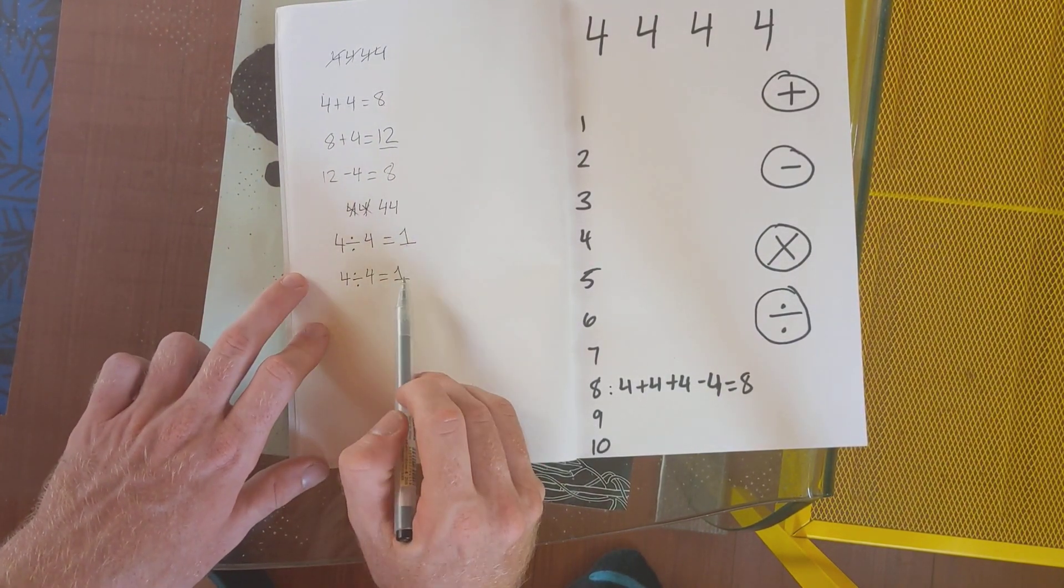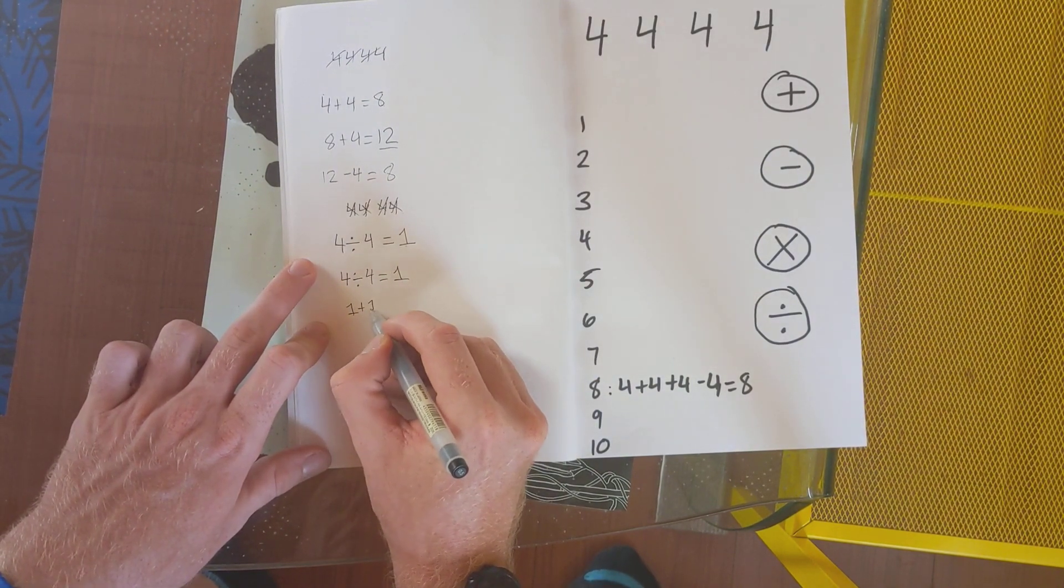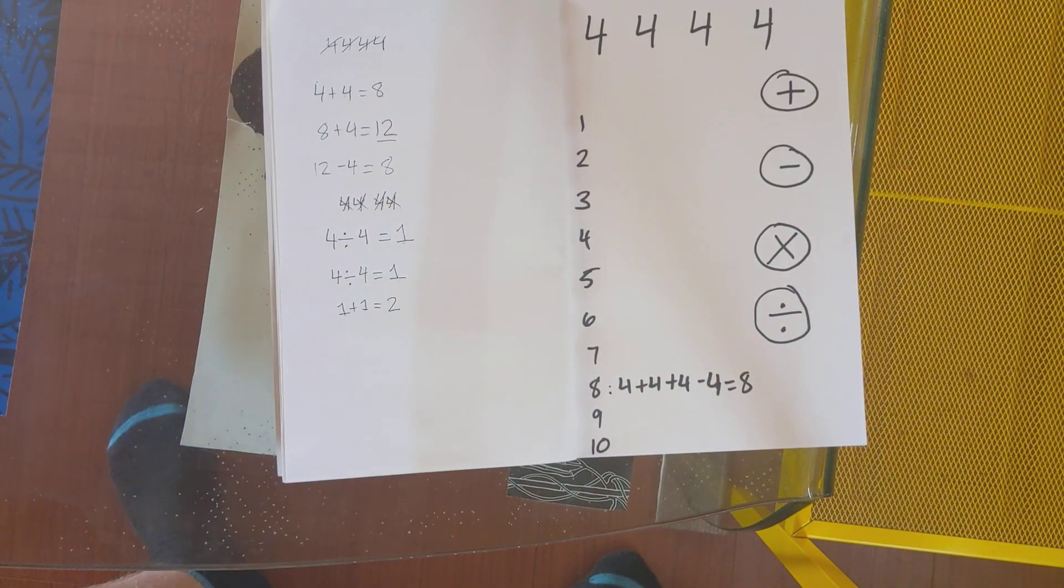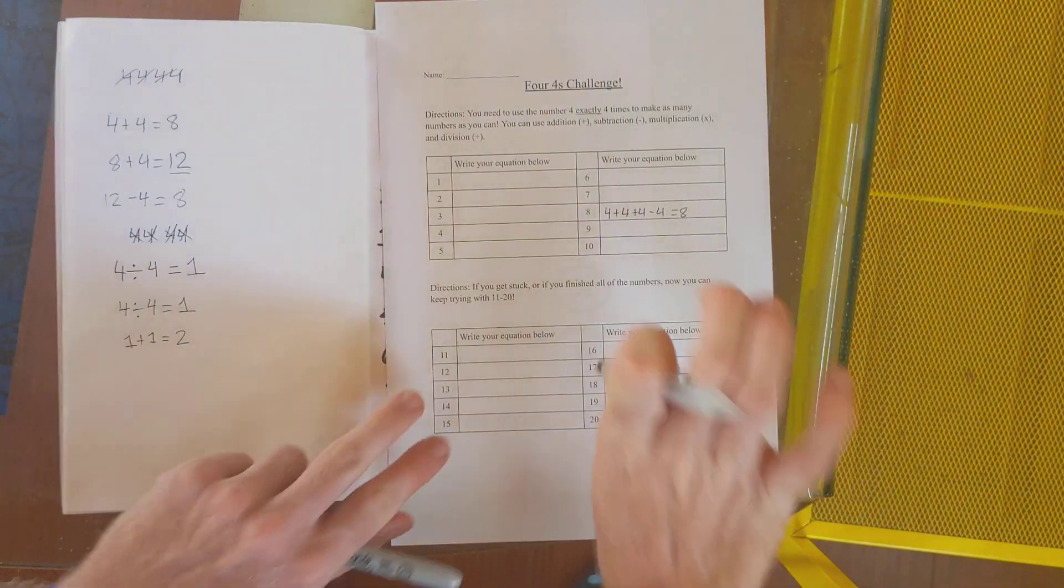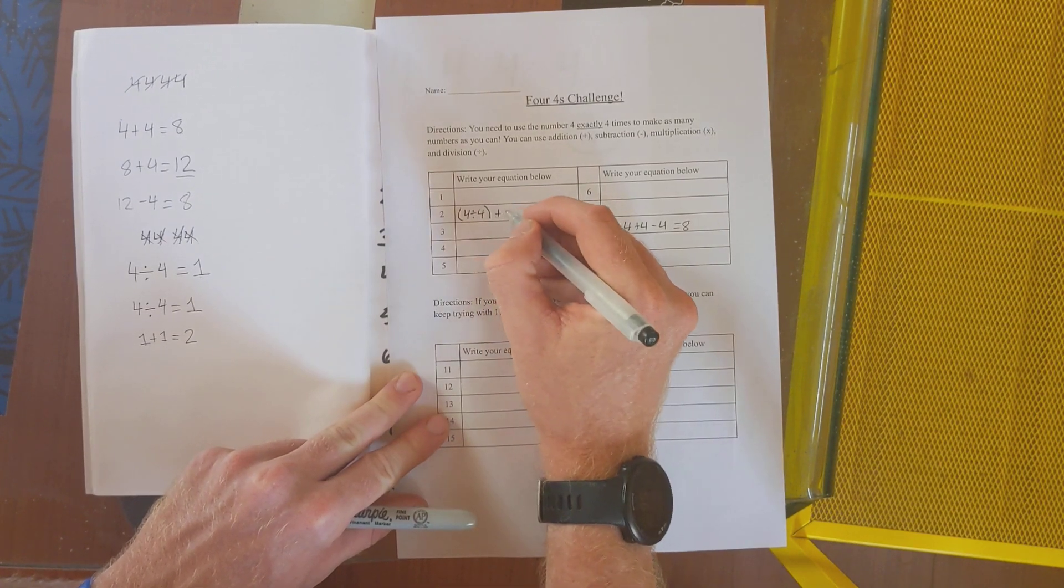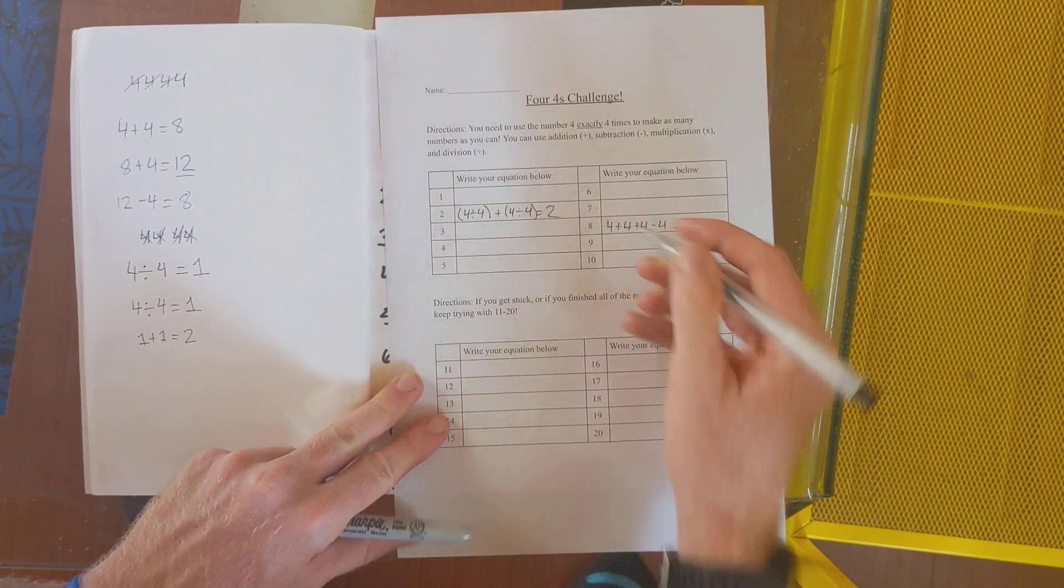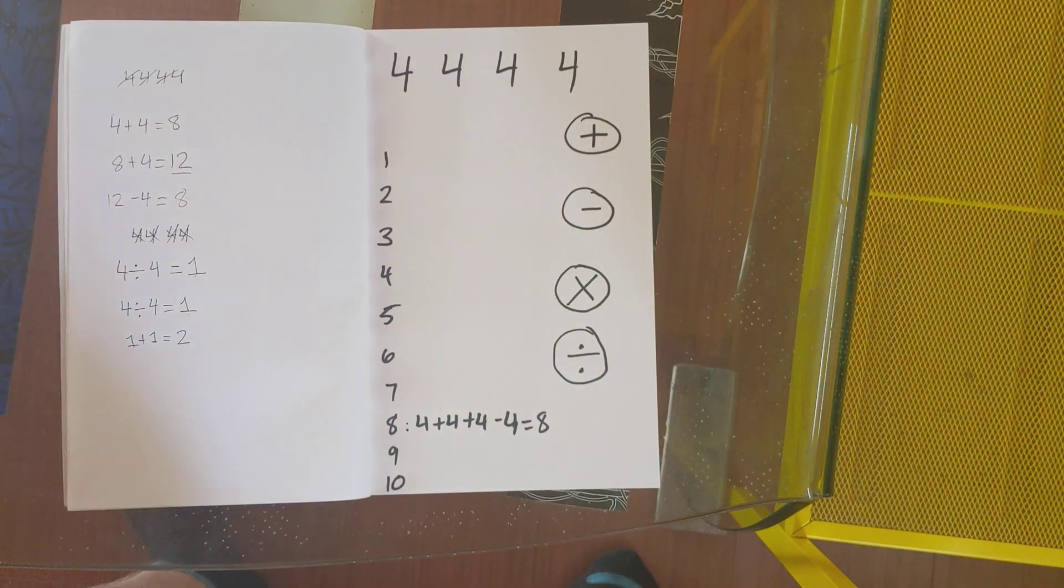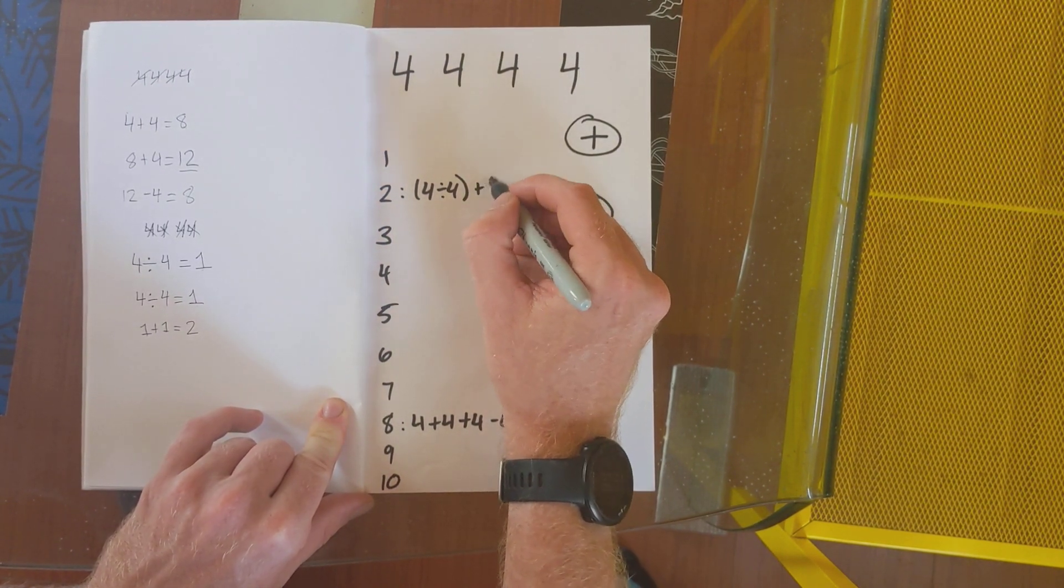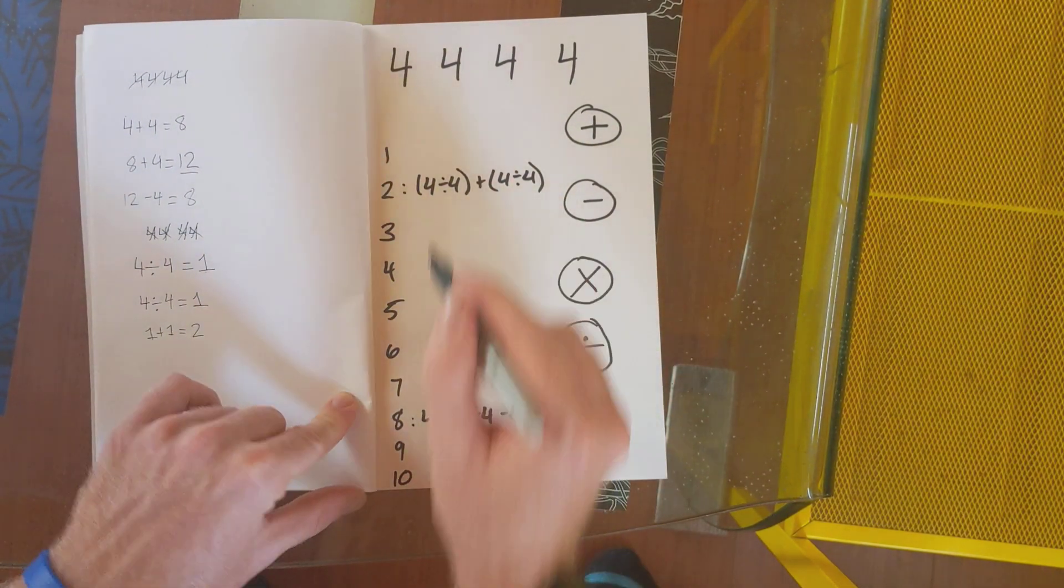So now I have one and one. I've used all of my fours. So I can do one plus one equals two. Perfect. So now I got my number two. So again if you have this paper you can write four divided by four plus four divided by four equals two. Or if you're on a different paper same thing. You can just say four divided by four is one plus four divided by four which is another one. One plus one equals two.